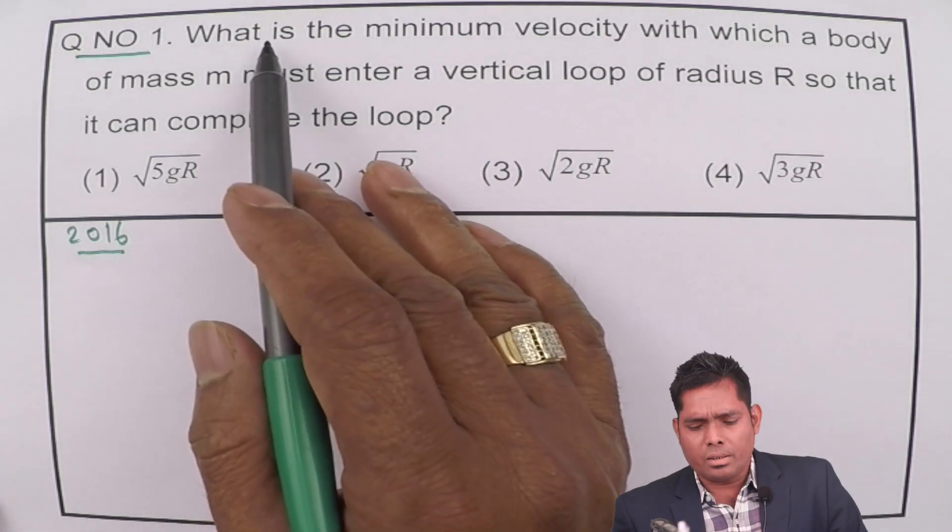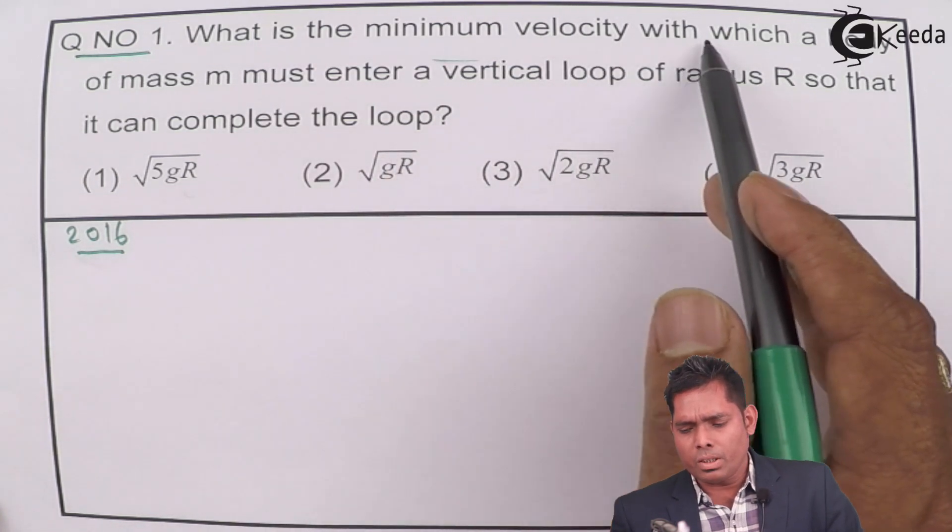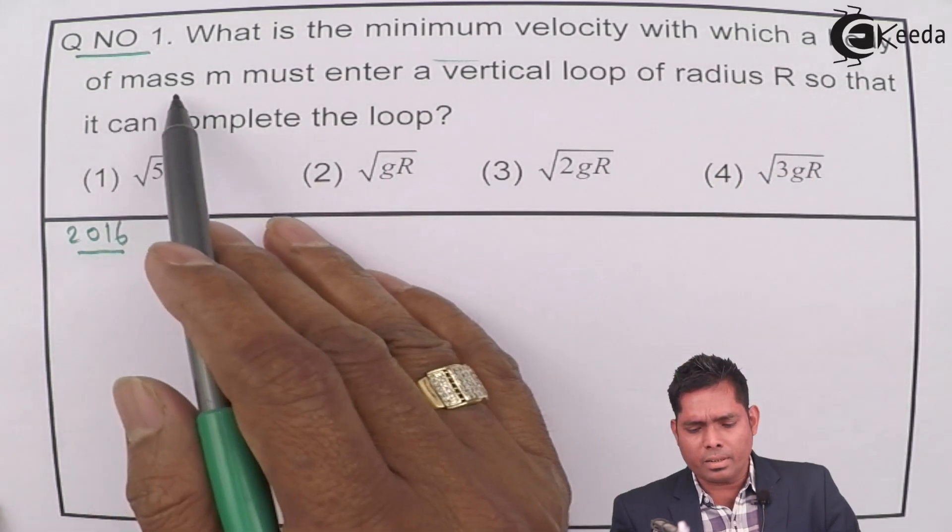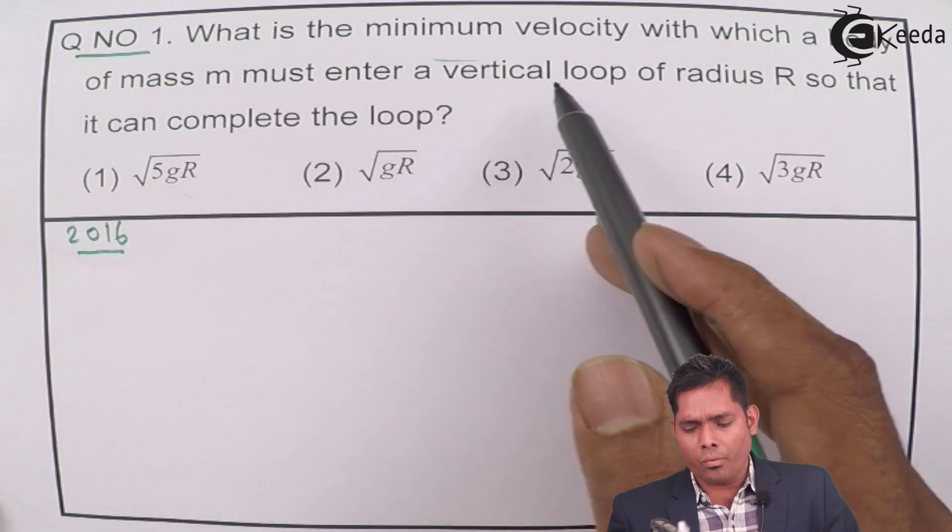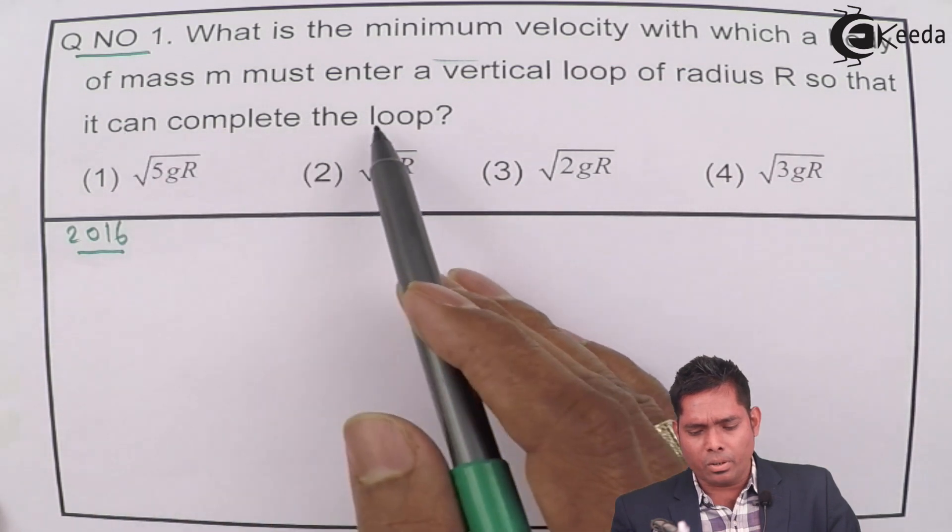The question is: what is the minimum velocity with which a body of mass M must enter a loop of radius R, so that it can complete the loop?